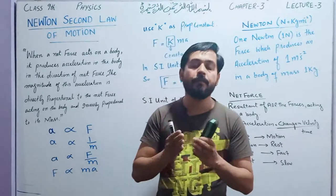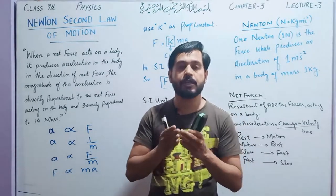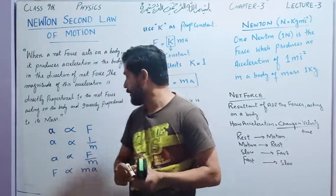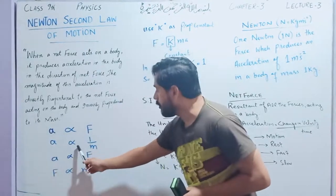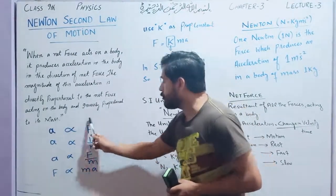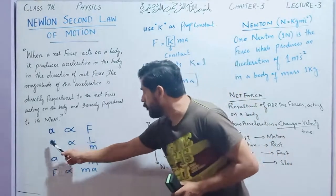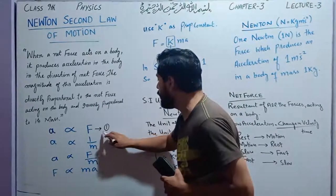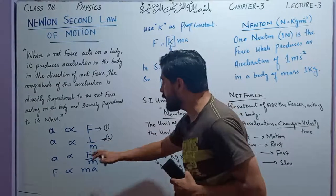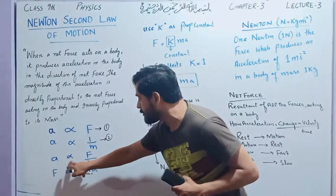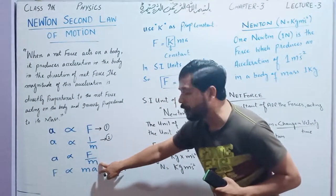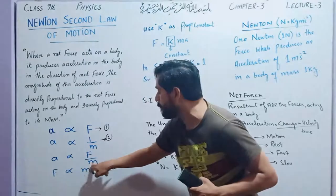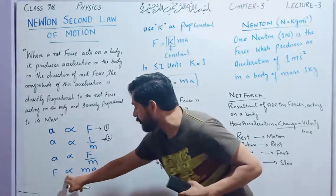So acceleration is inversely proportional to 1 over m. Combining both relations: acceleration is directly proportional to force (equation 1) and inversely proportional to mass (equation 2). Acceleration is directly proportional to force and inversely proportional to mass. If force is multiplied by mass then a times m. So force is directly proportional to m times a. Combining these proportionalities and removing the proportionality constant k, whose value equals 1 in SI units, we get the final formula.